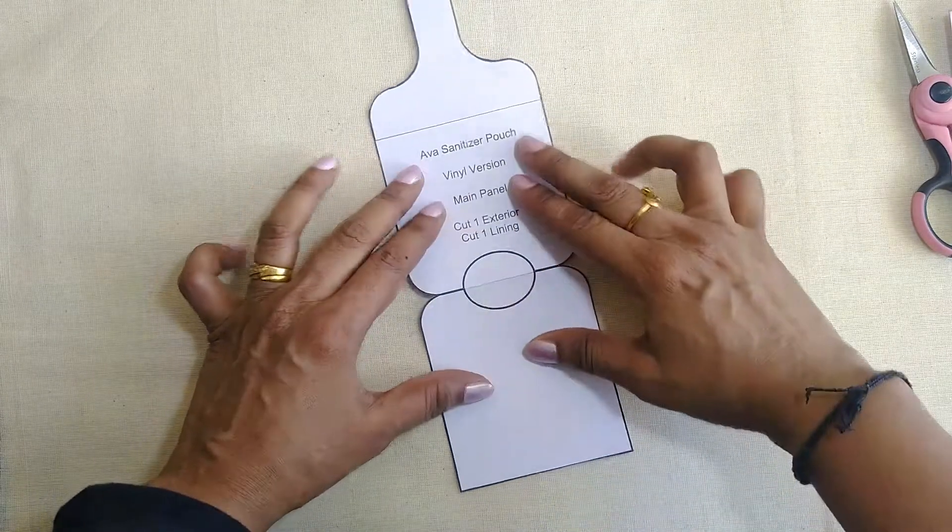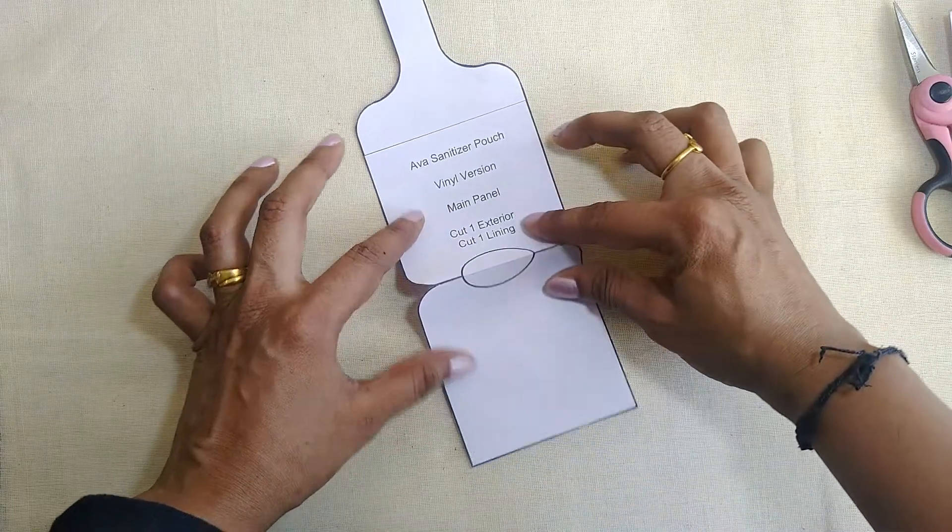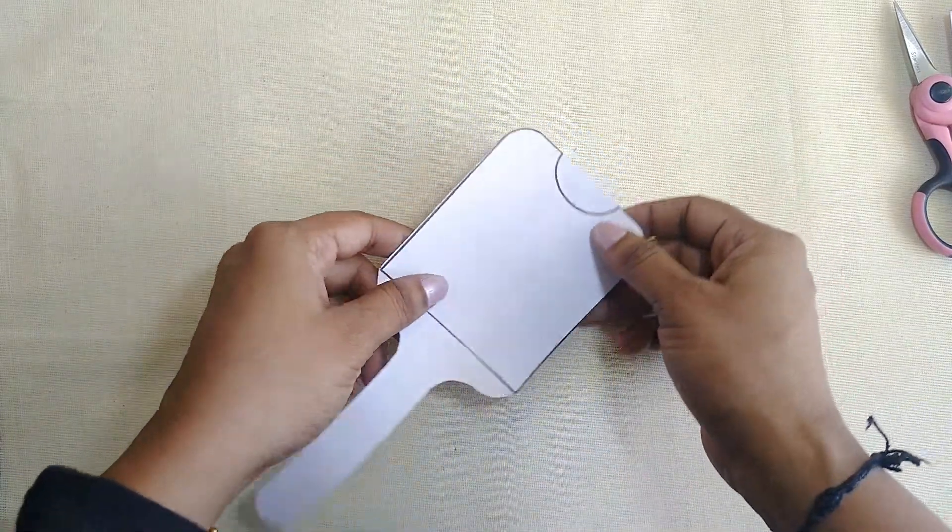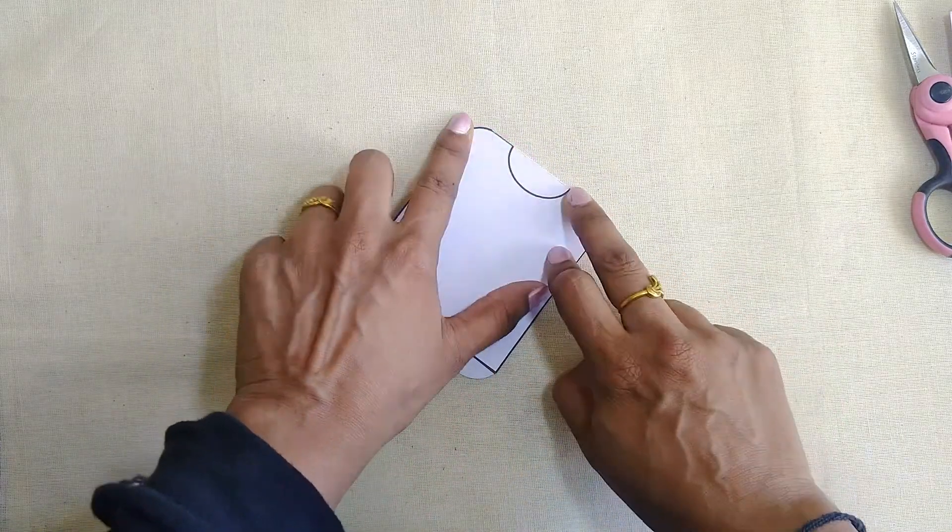In order to cut it out, you'll see these two lines - these are the fold lines. Just fold your pattern at the fold lines and make sure that it is aligned properly on all sides.